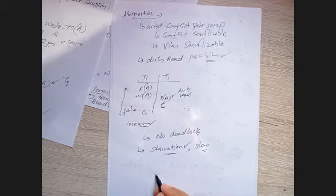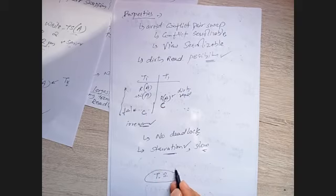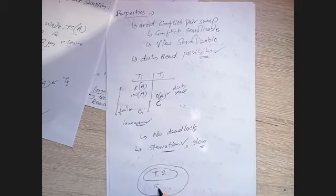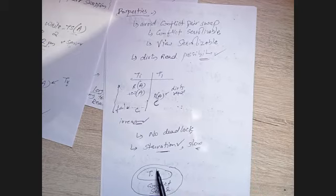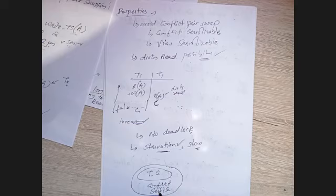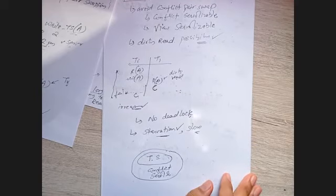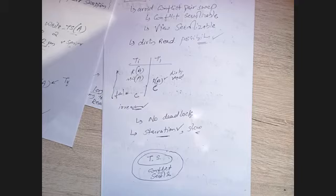An important note: the timestamp-based protocol is not able to generate all conflict-serializable schedules, but the schedules it does generate will always be conflict serializable. So its scope is a subset of all conflict-serializable schedules.